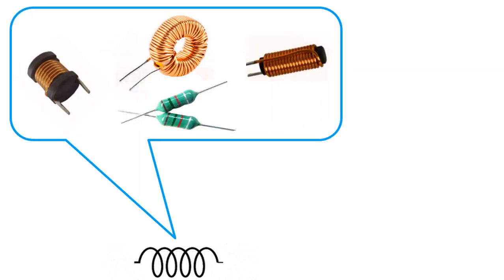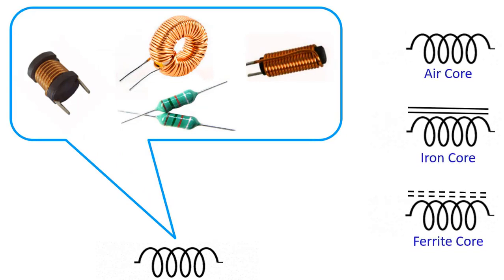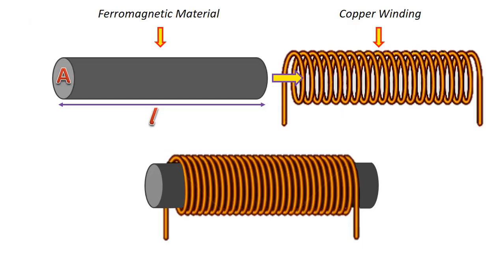In general, the symbol of coils in a circuit is shown as follows. But according to the type of core used in the coils, their symbols differ slightly.